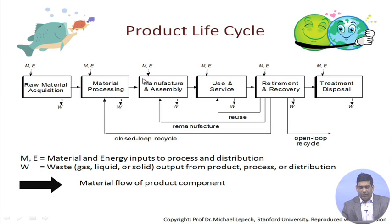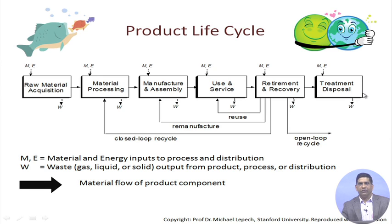Once the use phase is over, the product goes to retirement and recovery, and after whatever cannot be recovered, it goes to treatment and finally to disposal. All these steps — from raw material acquisition at the cradle to the very end at the grave — make up your product life cycle. This is your cradle-to-grave product life cycle. Make sure you listen to this video again to get a solid understanding of this concept, because you will be using it in subsequent problems throughout this course.